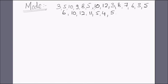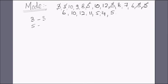For raw data it's simple — we just need to look at the data and pick the one which occurs the maximum number of times. Let's start counting: 3 occurs three times; 5 occurs — let's count — once, twice, three, four, five times.